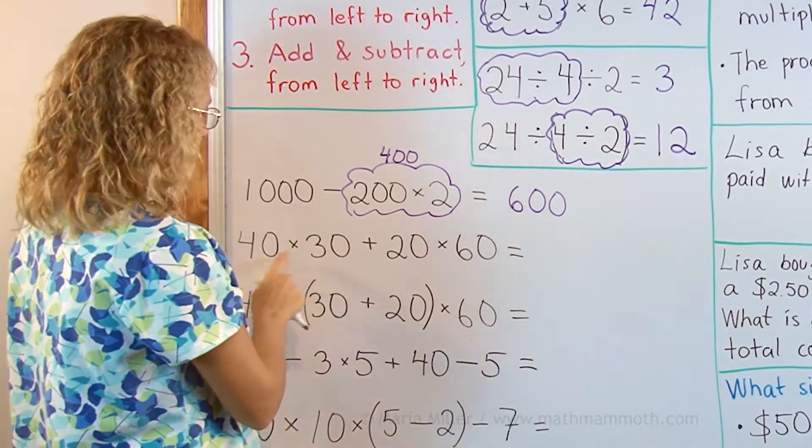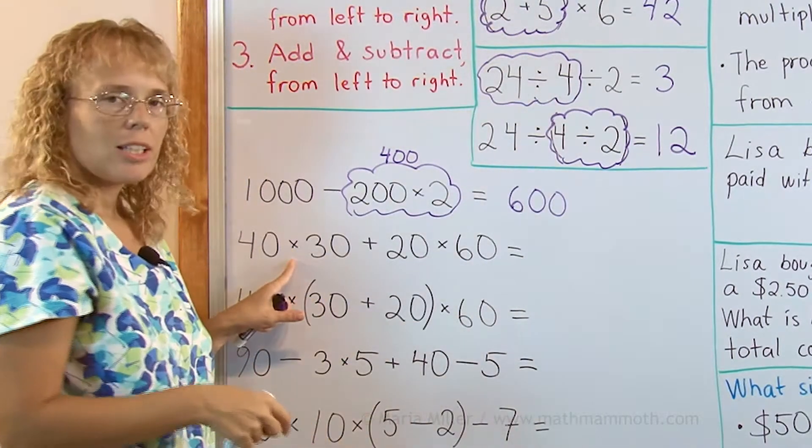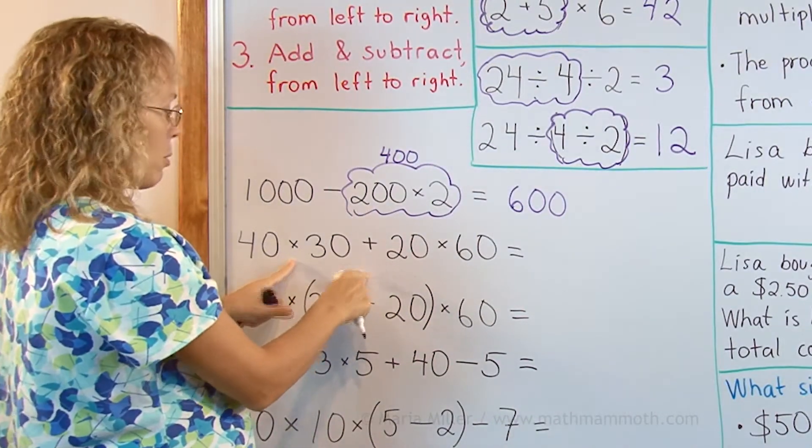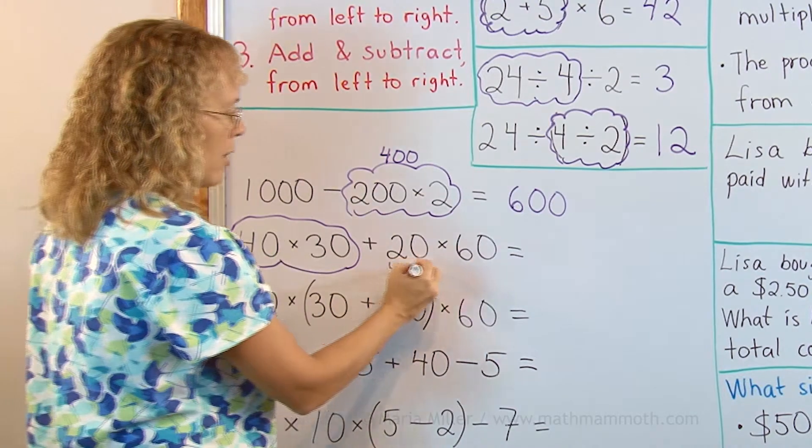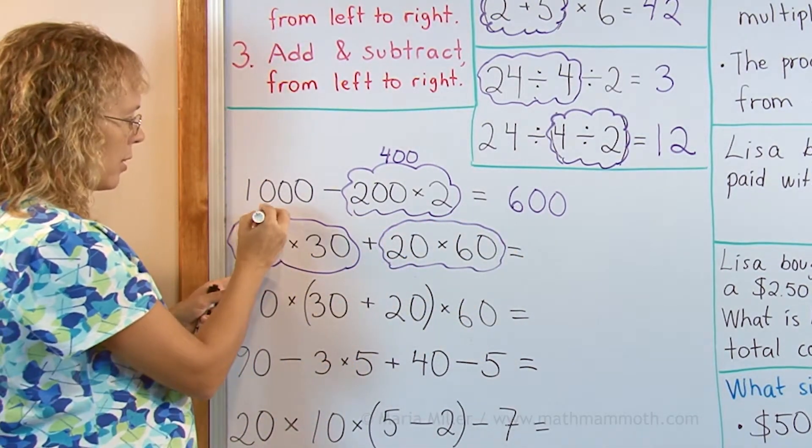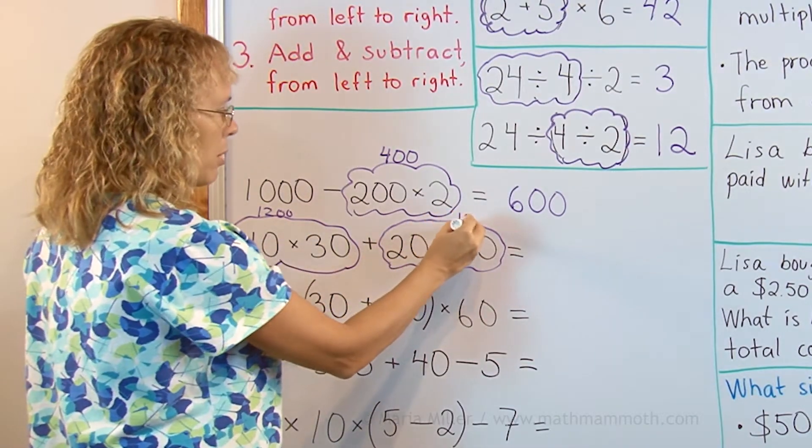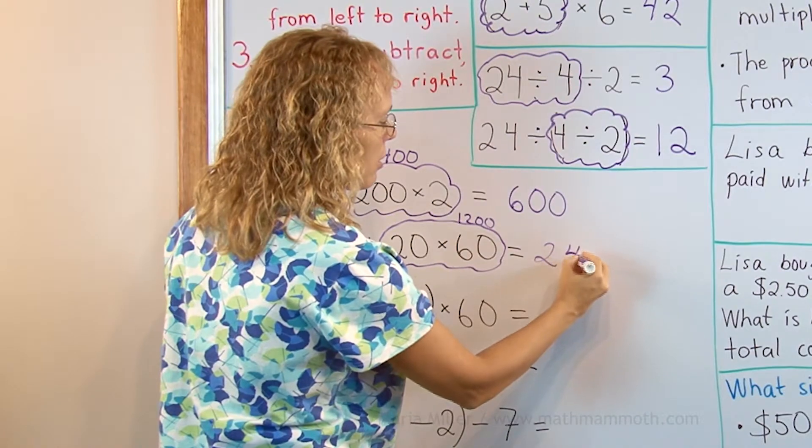Here we have 40 times 30 plus 20 times 60. Multiplications are done before the addition. The addition will be done last. So this one first here and then this one and lastly add. This here is 1200, this one is another 1200, and so then we lastly add 2400.